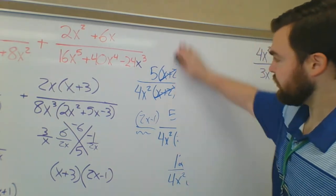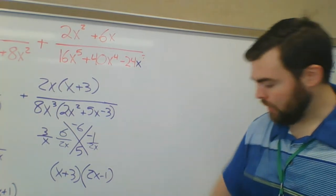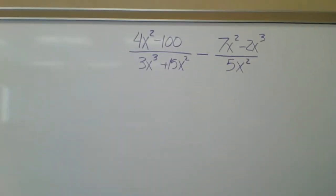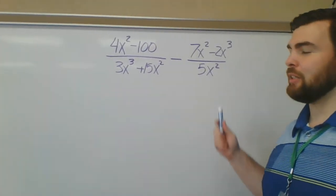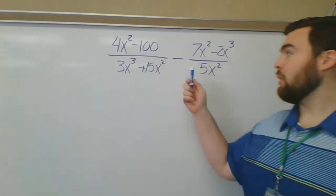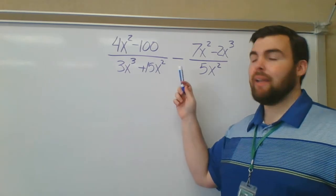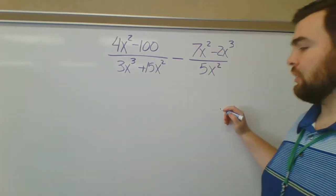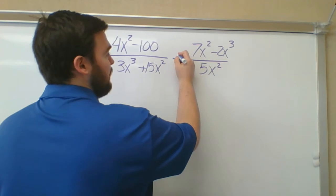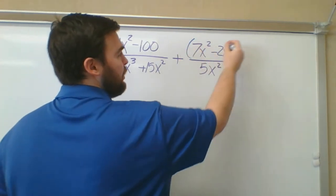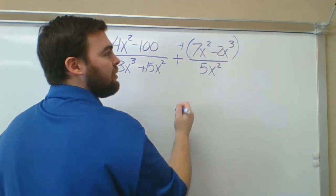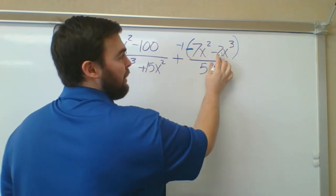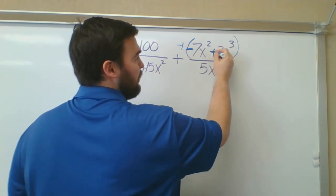Let's look at one more example. The first thing I want to address is this negative sign — I'm going to switch this to positive. But this is the case where there are two terms in the numerator on the right, so I need to think of it as distributing a negative 1 inside. This means positive 7x squared becomes negative 7x squared, and negative 2x cubed becomes positive 2x cubed.